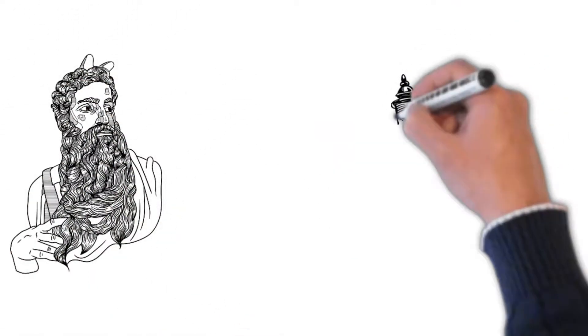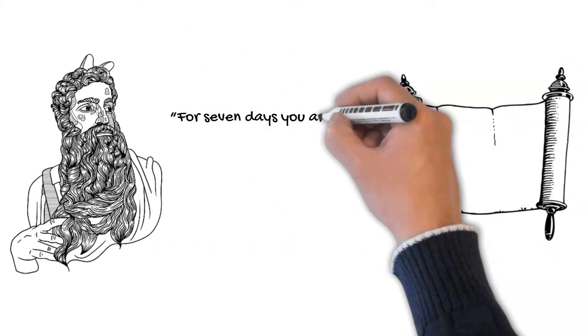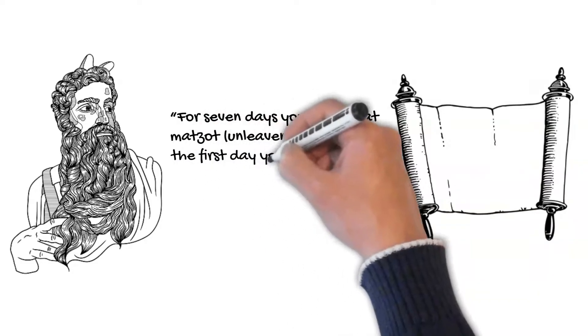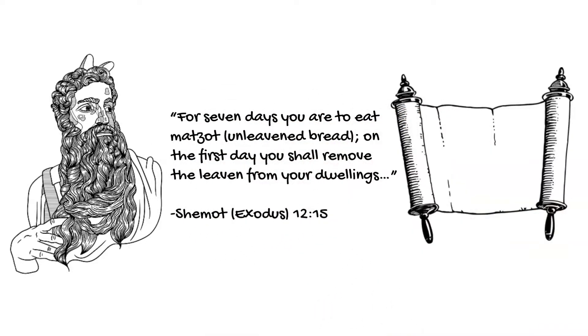The Torah says, for seven days you are to eat matzot, unleavened bread. On the first day, you shall remove the leaven from your dwellings. Shemot or Exodus 12:15.